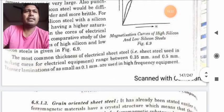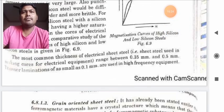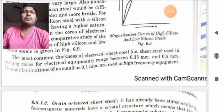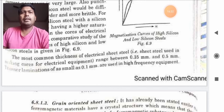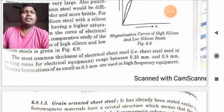The most common thickness of electrical sheet steel in making cores of electrical transformer ranges from 0.35 mm to 0.5 mm. Thinner lamination of as small as 0.1 mm are used in high frequency equipment. In our next class students, we will read about grain oriented steel. Thank you for watching.